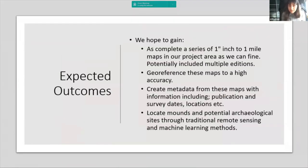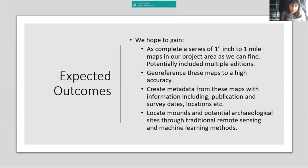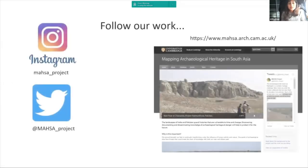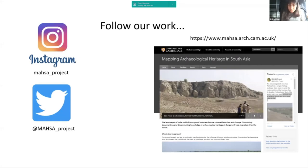We hope to get as complete a series as possible of one-inch-to-one-mile maps covering our project area of Pakistan and northern India, potentially with multiple editions to track landscape change. We aim to georeference these maps to a high degree of accuracy to detect archaeological features on the ground, and also to create metadata from these maps — publication dates, locations, surveyor general, and so on. Most importantly, we want to locate mounds and potential archaeological and heritage sites using remote sensing and machine learning methods. If you want to follow our work, you can visit our website or find us on Instagram and Twitter.